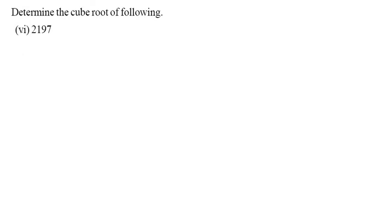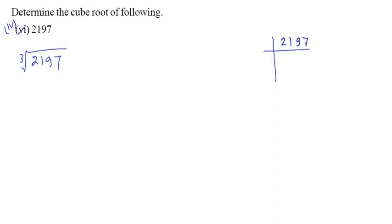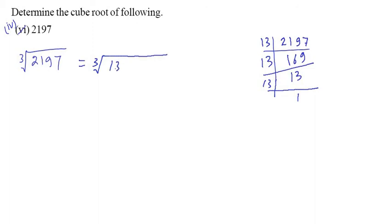Let us start the next — fourth question. So you have to write fourth. Cube root of 2197. First of all, do the prime factorization of 2197. It is divided by 13, so it becomes 169; once again by 13, so we get 13; and once again by 13, so we get only 1. So you have to write 13 × 13 × 13. It has one triplet, so 13 is the answer of the cube root of 2197.